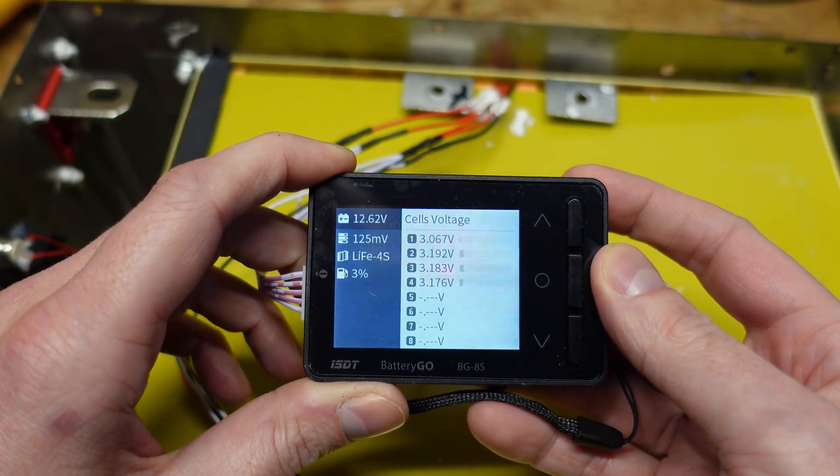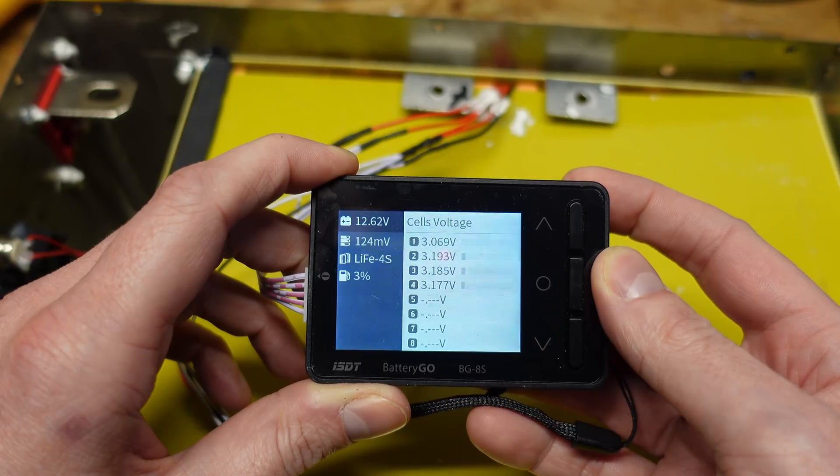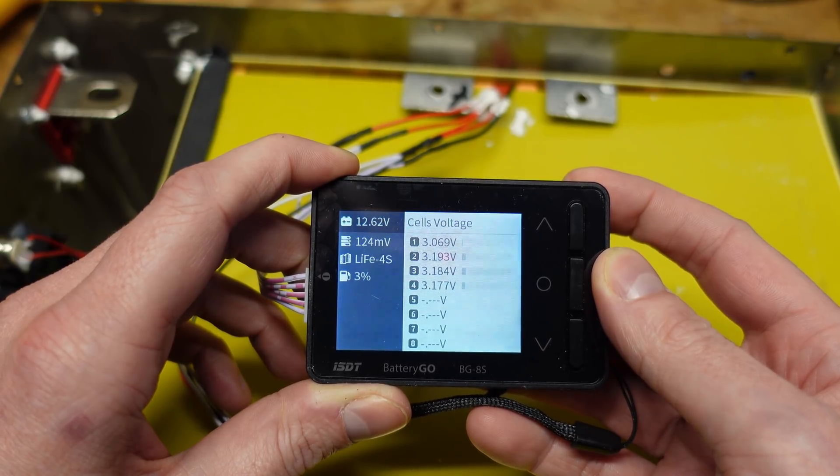Here we can see the voltage of each cell grouping, and we have a voltage differential of 124 millivolts between the high and the low cell.